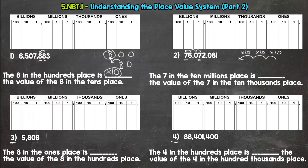So our value increased by 1,000. Let's read the sentence back. The 7 in the ten thousands place is 1,000 times the value of the 7 in the tens place. True.